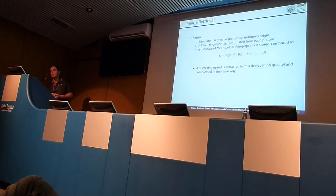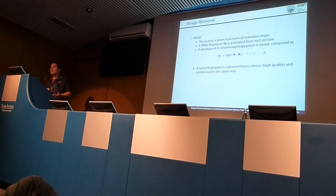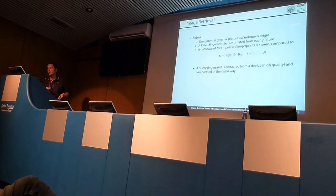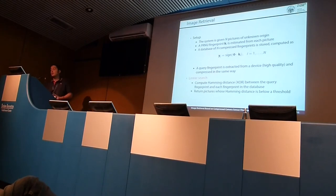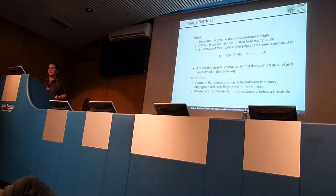How can we use this for image retrieval? The setup is as follows: the system is given a database of N pictures, we extract a single PRNU fingerprint for each picture to obtain N different PRNU fingerprints, and we store a dataset with the binary random projections of these fingerprints. We then present to the system a query in the form of a high-quality fingerprint, binarized using the same random projection. We search for the nearest fingerprint by computing the distance between the query and each fingerprint in the dataset, and return every fingerprint whose distance is below a given threshold.